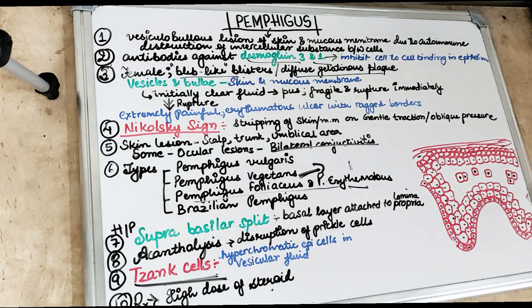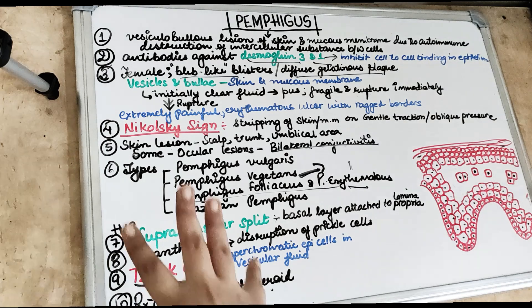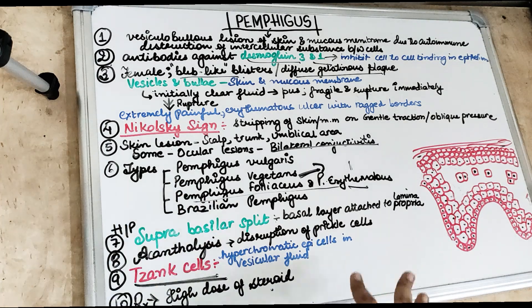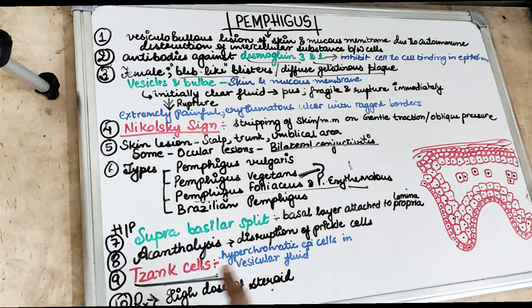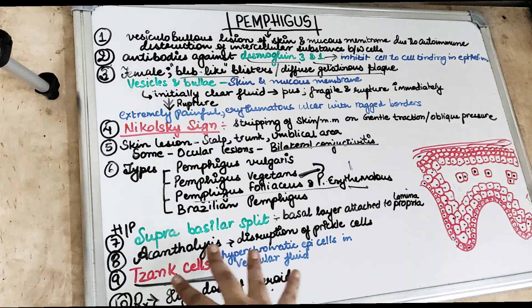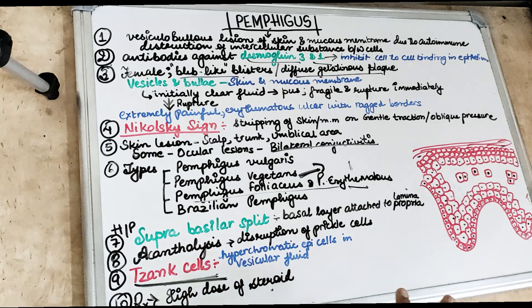In summary, pemphigus vulgaris is characterized by the Nikolsky sign, wherein there is stripping of the skin. Histologically, we see Tzanck cells and a suprabasilar split in pemphigus.